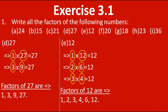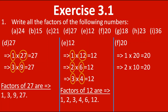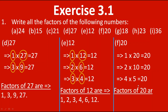Now let's move towards F, that is 20. Starting from 1: 1 into 20 gives 20. Next number is 2: 2 tens are 20. Next is 3 — we can't find 20 in the 3rd table because we have 21 there. Next we move to 4: 4 fives are 20. Next is the 5th table — here it is reversing, so we stop. The factors of 20 are 1, 2, 4, 5, 10 and 20.